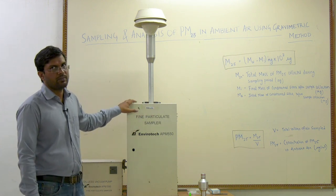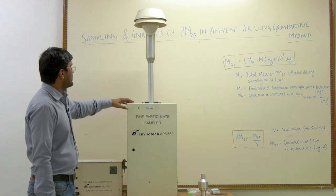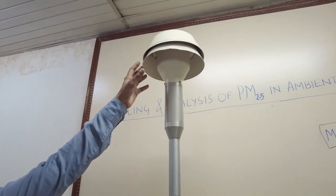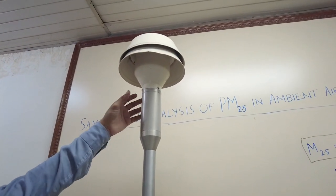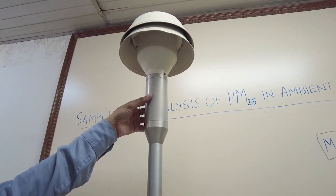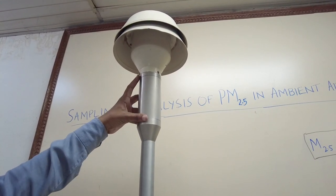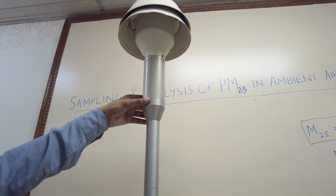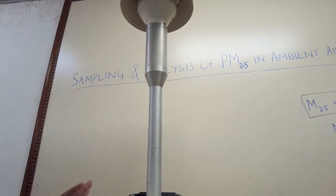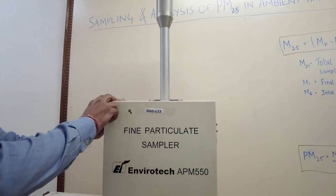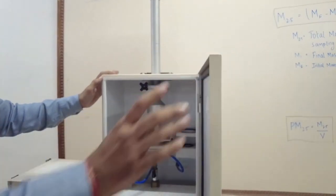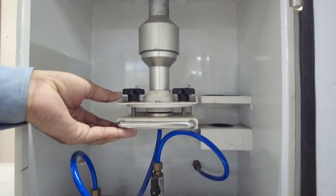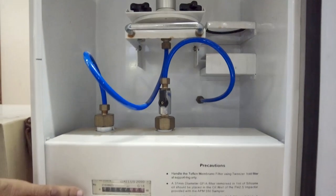I will explain the different components of the instrument. The upper part is called the inlet. After the inlet, this part is called the impactor — the PM 10 impactor tube — to segregate particles larger than 10 microns in size. Particles smaller than 10 microns will go through the air stream passing down through the down tube and into the housing of the APM 550 sampler. In the housing we have three major components: the winds impactor assembly, the filter holder assembly, and the dry gas meter.